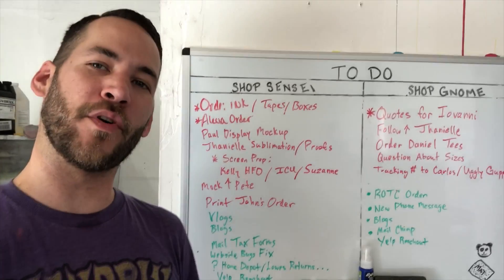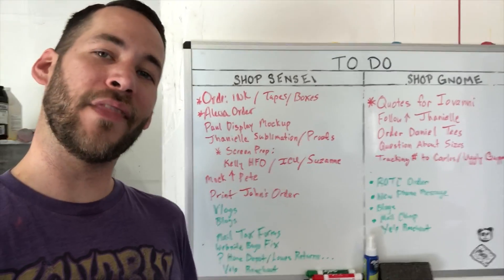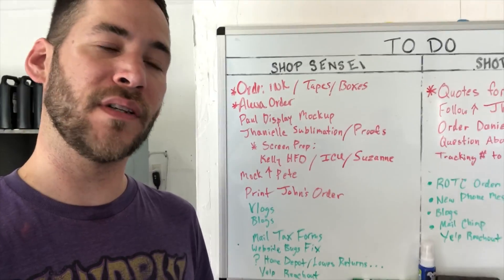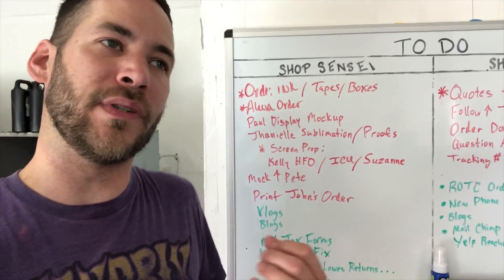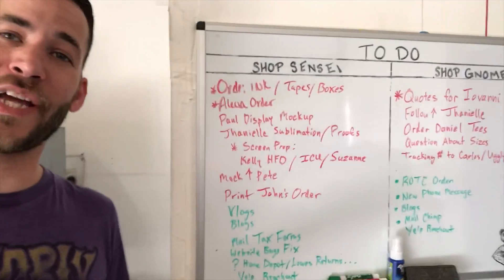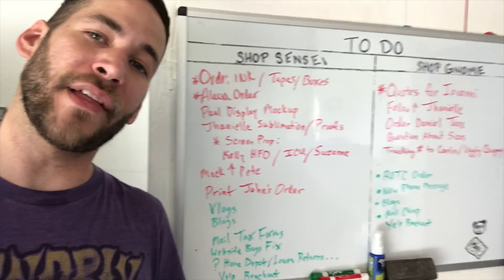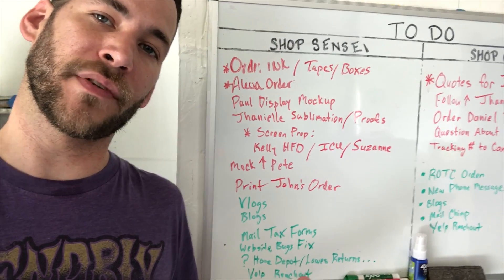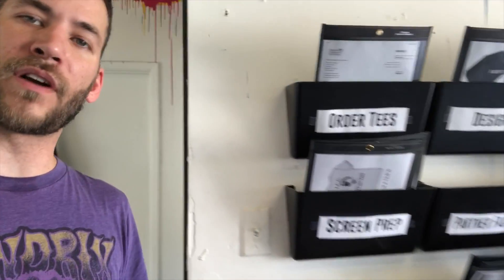So here is the gist of it. We have this board that we use to keep us on top of everything we need to do running our business daily. As you can see, we have quite a bit of things that we need to do and take care of. And this is essentially how we keep track of where all of our orders are at and what stage they are in.